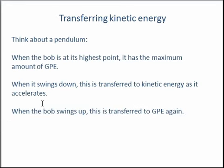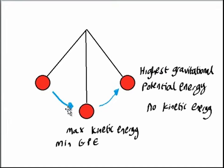Then when the bob swings back up, it is transferred into gravitational potential energy again because it's going further away from the surface of the Earth. The height is increasing, which increases the gravitational potential energy.